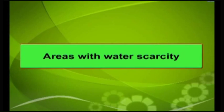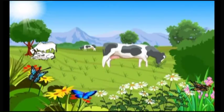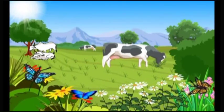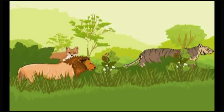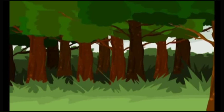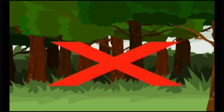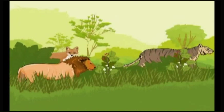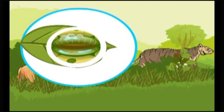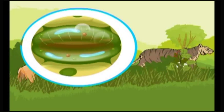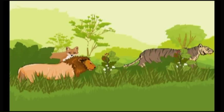In areas where the amount of water is not adequate, the type of flora and fauna depends on the exact amount of water available. Tall trees are usually absent in these regions and small shrubs are seen. Most of the plants have small leaves which reduces water loss by transpiration. Very few animals are seen in these regions and the majority of them are carnivorous.